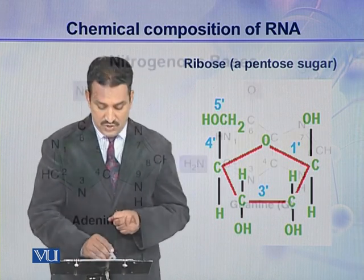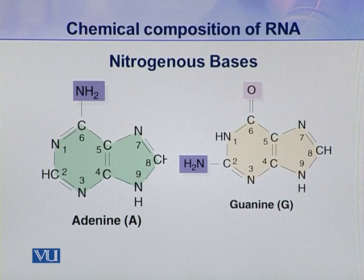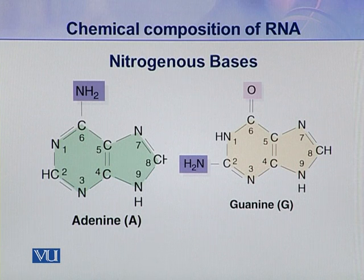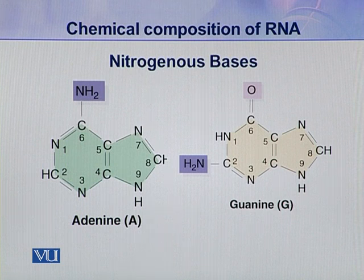The second component of ribonucleic acid is the nitrogenous base. There are mainly two types of nitrogenous bases present in ribonucleic acid: purines and pyrimidines. The two types of purine bases — adenine and guanine — are present in the ribonucleotide. These two bases, adenine and guanine, were also present in the deoxyribonucleotide.